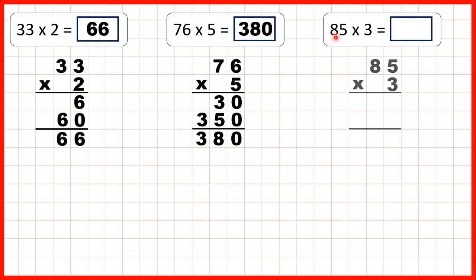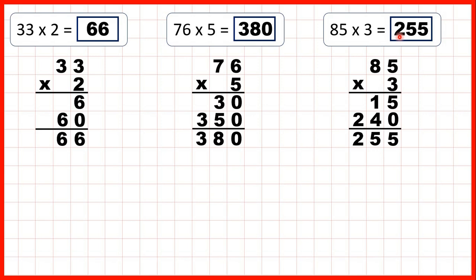Finally, we have 85 times 3. 5 times 3 is 15. We write a zero on the end of our second answer line in our ones-place, because we're multiplying our eight tens. 8 times 3 is 24. So then we just add up our answer lines to get 255.